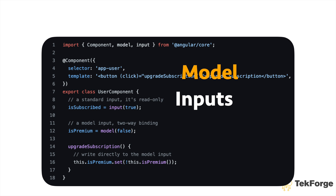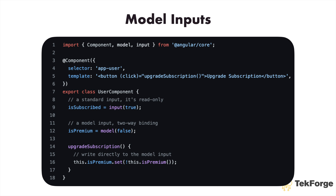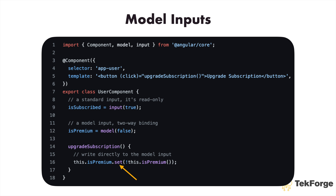Angular 18 introduces enhanced support for model inputs, which provides a more intuitive way to handle input data binding and validation. Defining a model input is a bit similar to creating a standard input — both allow you to bind a value into the property. However, with a model input, you can write values into the property. A standard input is read-only, while a model input supports two-way data binding, so you can write directly to it.